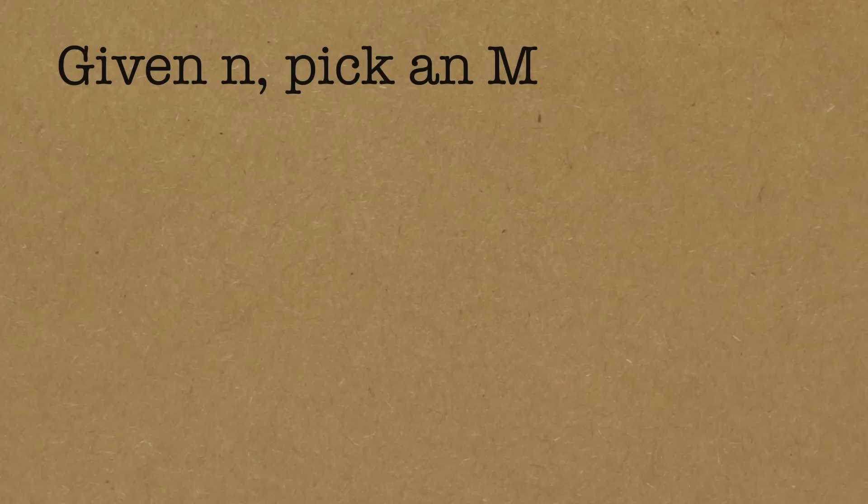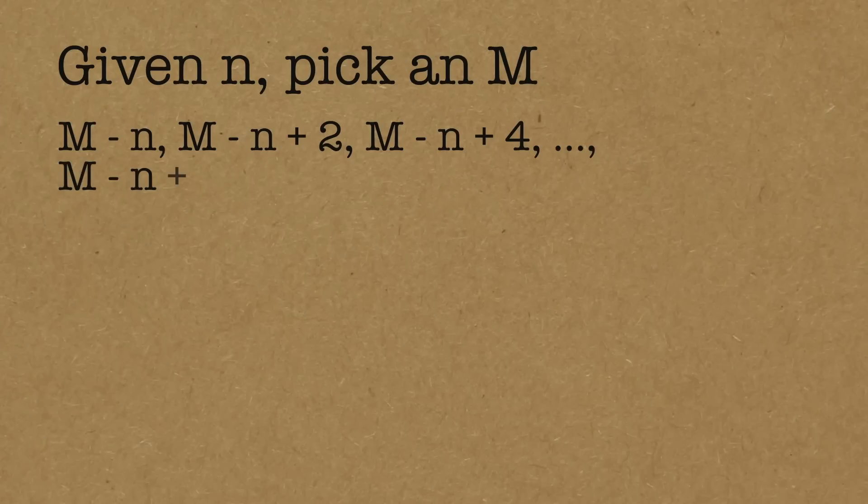So we're given n and then we pick an m, typically square root of n, that kind of size. So take the numbers m minus n and, think of n as being 50 or something. So m minus n is a rather large negative number. m is going to be a small positive number. m minus n and then go up by twos. m minus n plus 2, m minus n plus 4. And we want to go into n numbers.